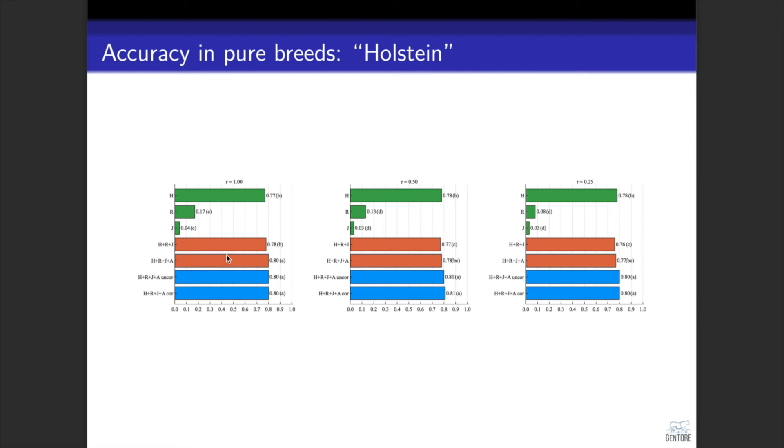And adding data from admixed population slightly increased the accuracy of just combining the pure breed data. Holstein represents the large breed and Jersey represents the small breed, so we also expected more benefit of using data from other breeds and admixed individuals for the smallest breed. And we slightly improved the accuracies over just combining the data when we used breed origin of alleles models.